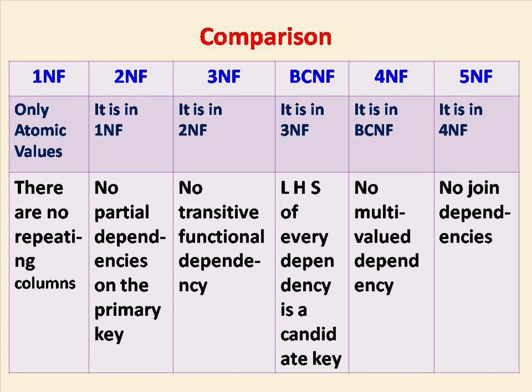BCNF requires that the left-hand side of every dependency is a candidate key. Fourth normal form has no multi-valued dependencies. Finally, fifth normal form has no join dependencies. Here you can see the comparison of all normal forms.